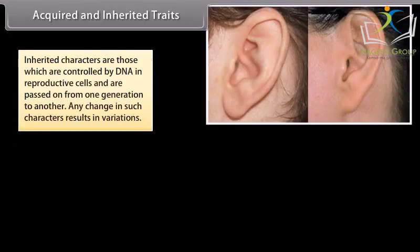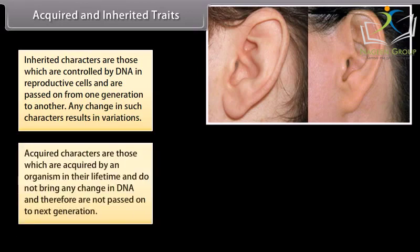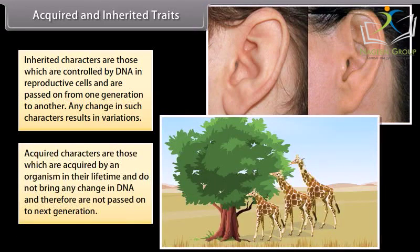Inherited characters are those which are controlled by DNA in reproductive cells and are passed on from one generation to another. Any change in such characters results in variations. Acquired characters are those which are acquired by an organism in their lifetime and do not bring any change in DNA, and therefore are not passed on to the next generation.